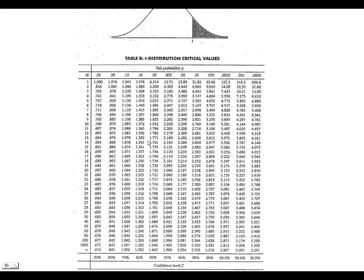So, when we do the 95%, we're going to move over to the 0.025. So, 2.131 is the value we're going to use there.